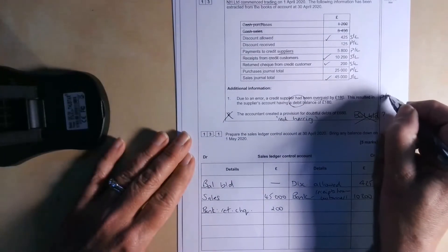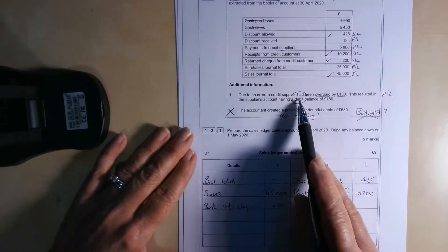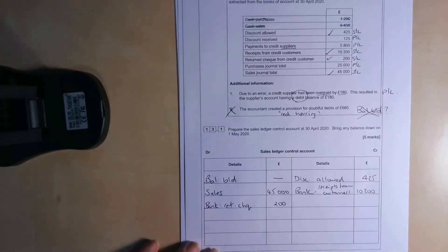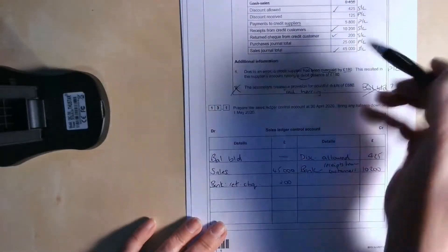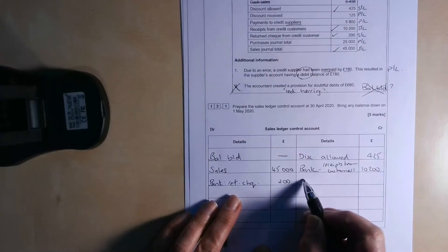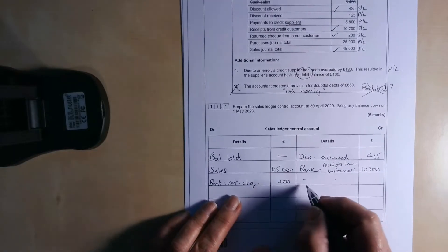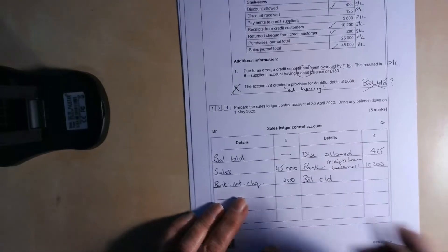And then this one to do with the supplier is going to be on the purchase ledger because it's to do with a credit supplier. So it's telling us that they've got a debit balance carried down of £180. We'll need to deal with that in a minute. So as I said, there are no contra entries here. I can't see any, which is unusual for a control account question. But if there were contra entries, we'd be crediting the sales ledger control account and debiting the purchase ledger control account.